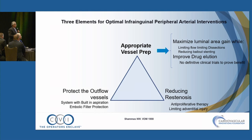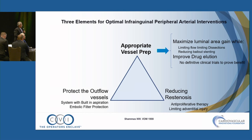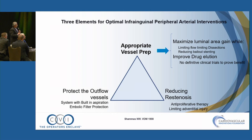Appropriate vessel prepping — we have many tools including atherectomy — aims to maximize luminal area gain while limiting dissections, reducing bailout stenting, and possibly improving drug elution for better outcomes. Reducing restenosis involves anti-proliferative therapy, and the FDA has given up on the idea that paclitaxel hurts people. Limiting adventitial injury is important — as you damage the adventitia, restenosis becomes very likely, as validated by Mount Sinai data. Protecting outflow vessels can be done with a built-in aspiration system or embolic filter protection.